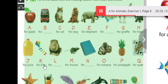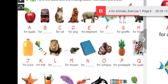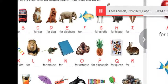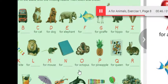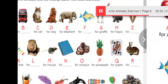L for lion, M for mouse, N for notebook, O for octopus, P for pineapple, Q for queen.